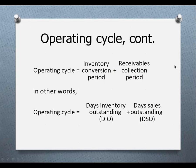In terms of equations, the operating cycle is the sum of how long it takes to convert inventory into sales and how long it takes to collect on receivables — the inventory conversion period and the receivable collection period. In notation, that's DIO, the days inventory outstanding, plus the days sales outstanding.